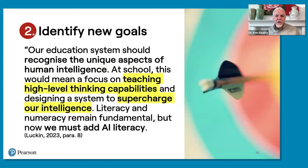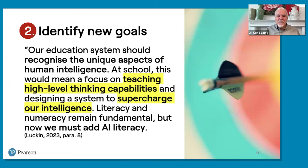The second thing is to identify new goals. Our education system should recognize the unique aspects of human intelligence. At school, this would mean focusing on teaching high-level thinking capabilities and designing a system to supercharge our intelligence. Literacy and numeracy remain fundamental — we're still going to teach reading, writing, speaking, listening, counting, and numbers. But now we must add artificial intelligence literacy. We have to start teaching students: How do you do an AI search? How do you know when something isn't quite right? What tricks and tips can you use to get better output?